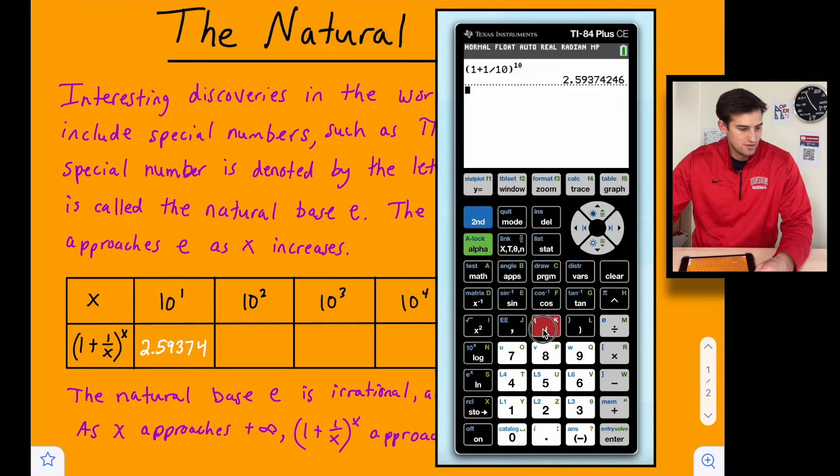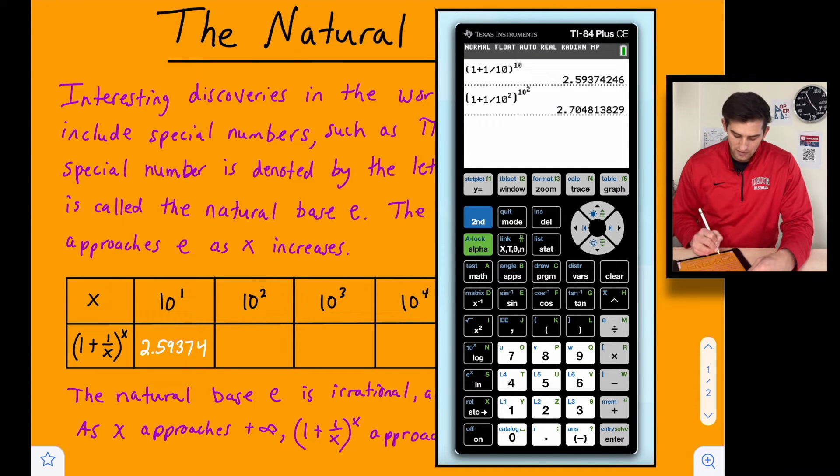All right, so now we're going to do the next one. 1 plus 1 over, and we could do 100 because we know 10 squared is 100, but I'll show you that you can use 10^2 here. So now we're going to close the parenthesis, and we're going to raise it to a power of 10^2. So now we get 2.70481.